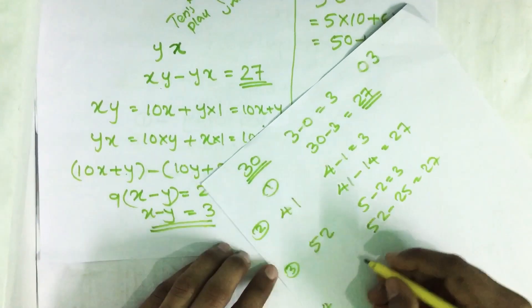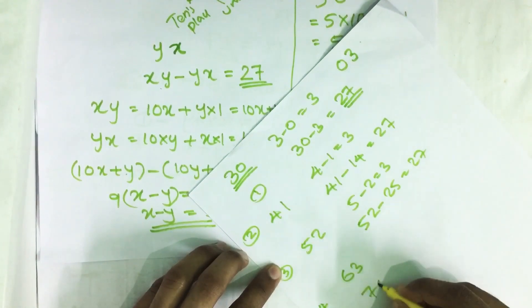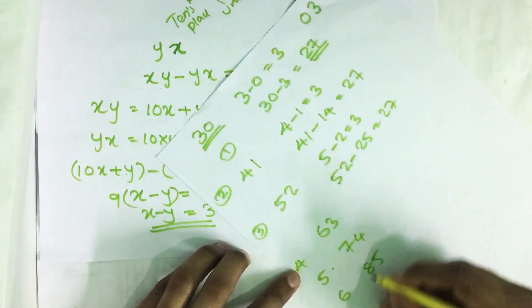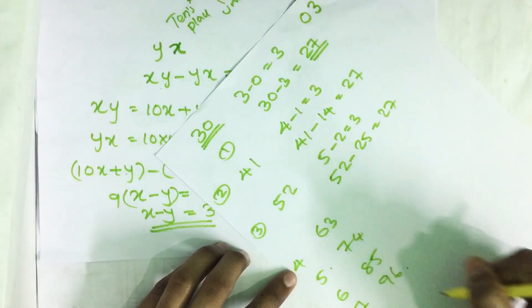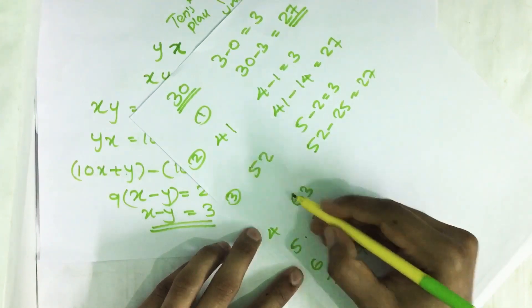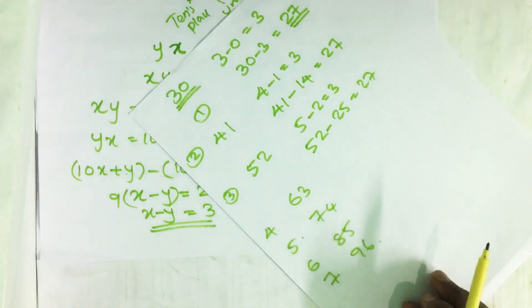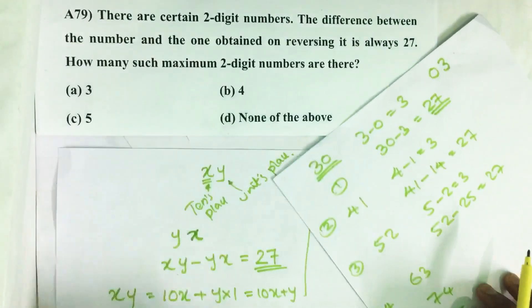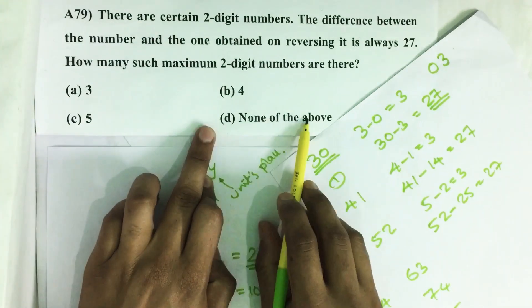63, 74, 85, 96. Similarly we can also take 69, 58, 47, 36, 25. All these give on reversing the number, the difference between these two numbers as 27. So there are more than 5 such numbers. So our answer is none of the above.